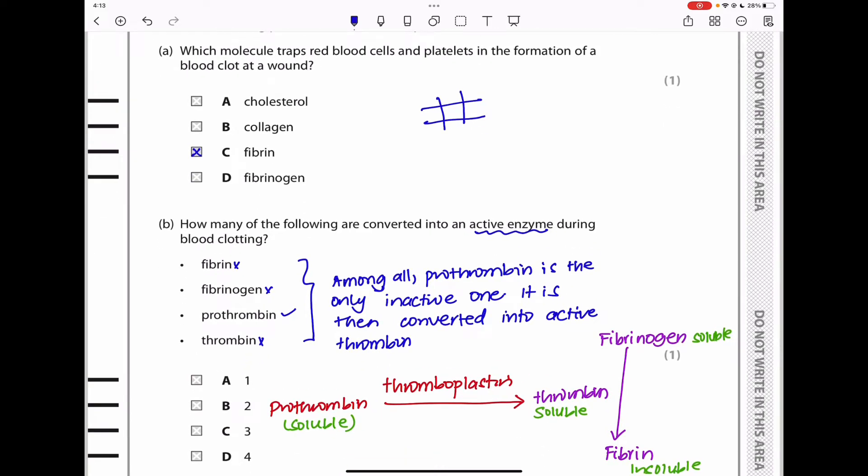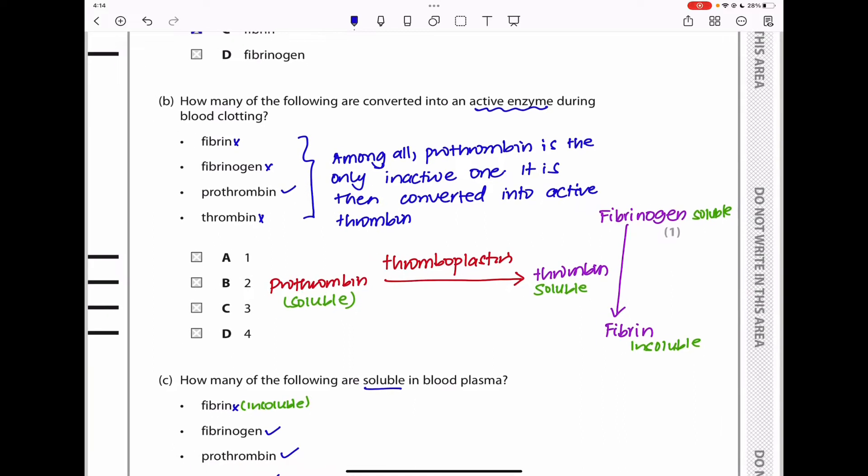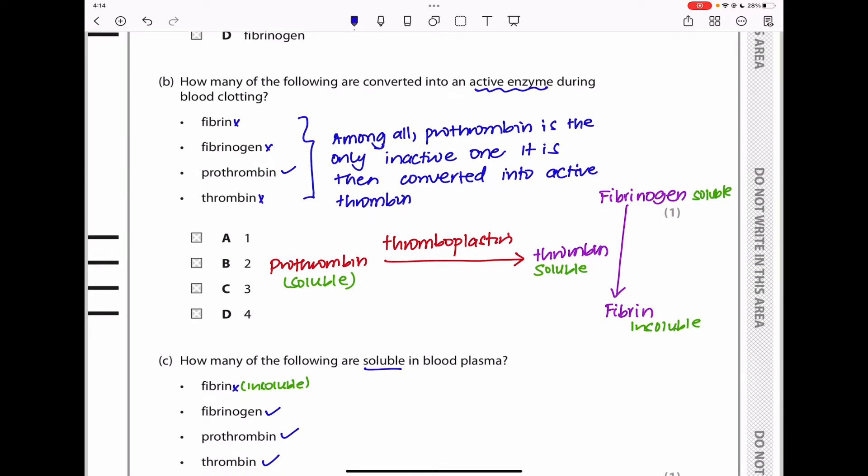Part B says, how many of the following are converted into an active enzyme during blood clotting? Fibrin is not converted into an enzyme. Fibrinogen is not an enzyme. Prothrombin can be converted, and thrombin is not. Among all, prothrombin is the only inactive one. It is then converted into active thrombin. Prothrombin is converted into thrombin by thromboplastin, and then thrombin converts fibrinogen into fibrin. I tried to show you so that we can answer question C as well. So for that part, it's only one, and therefore the answer should be A.